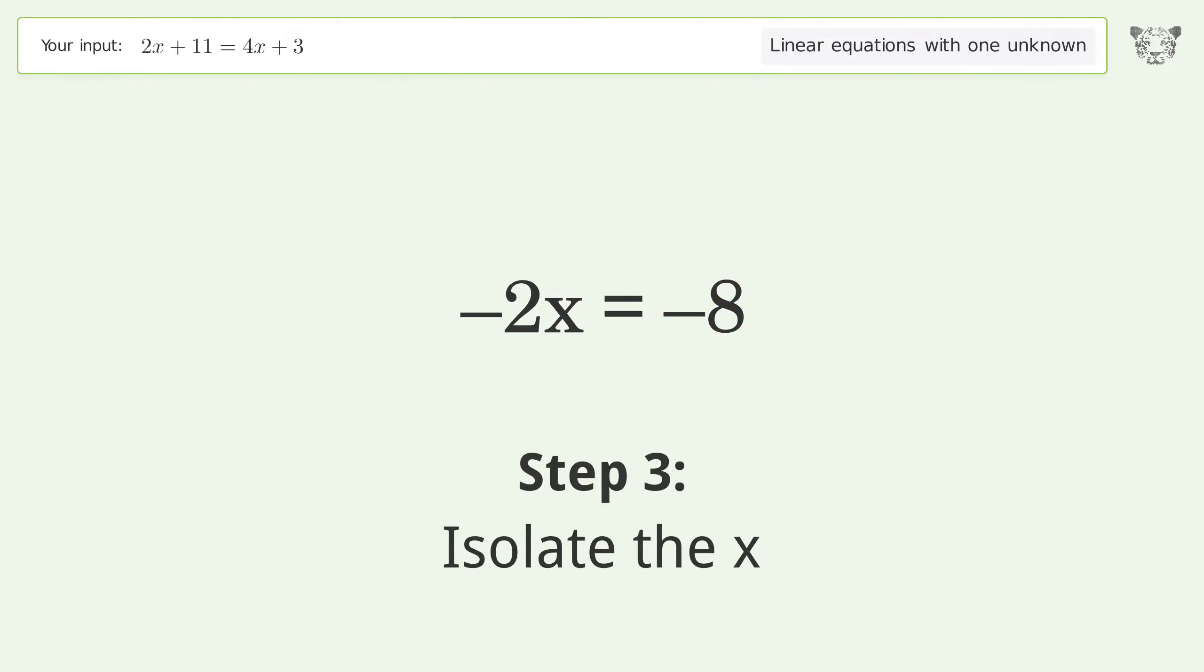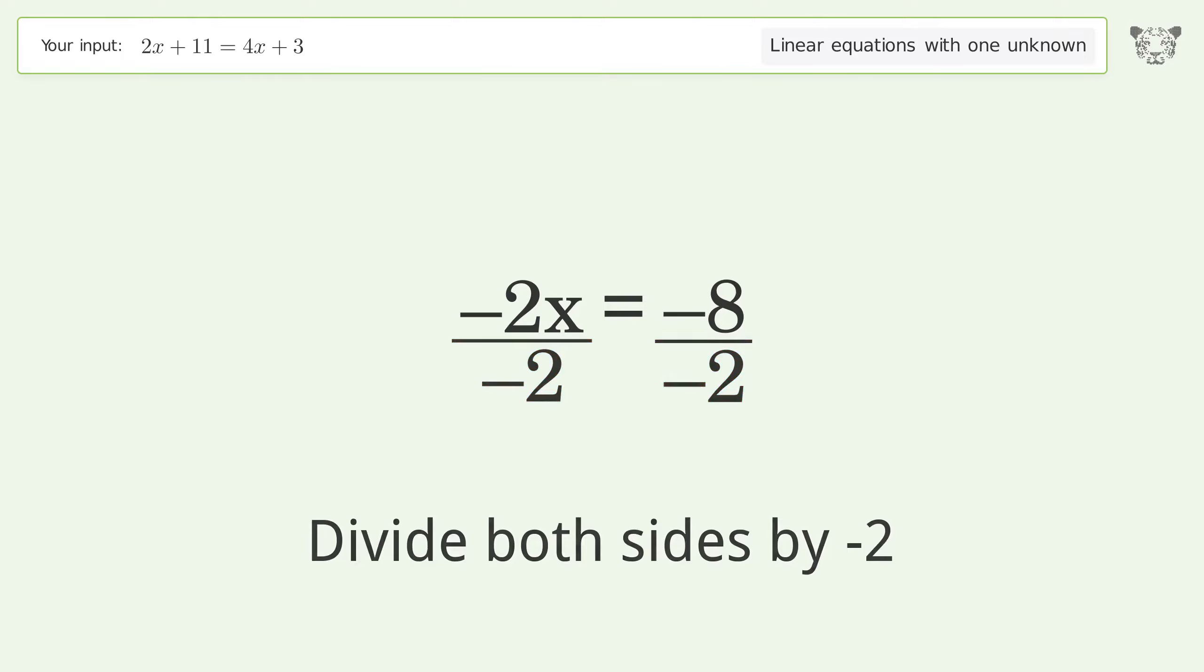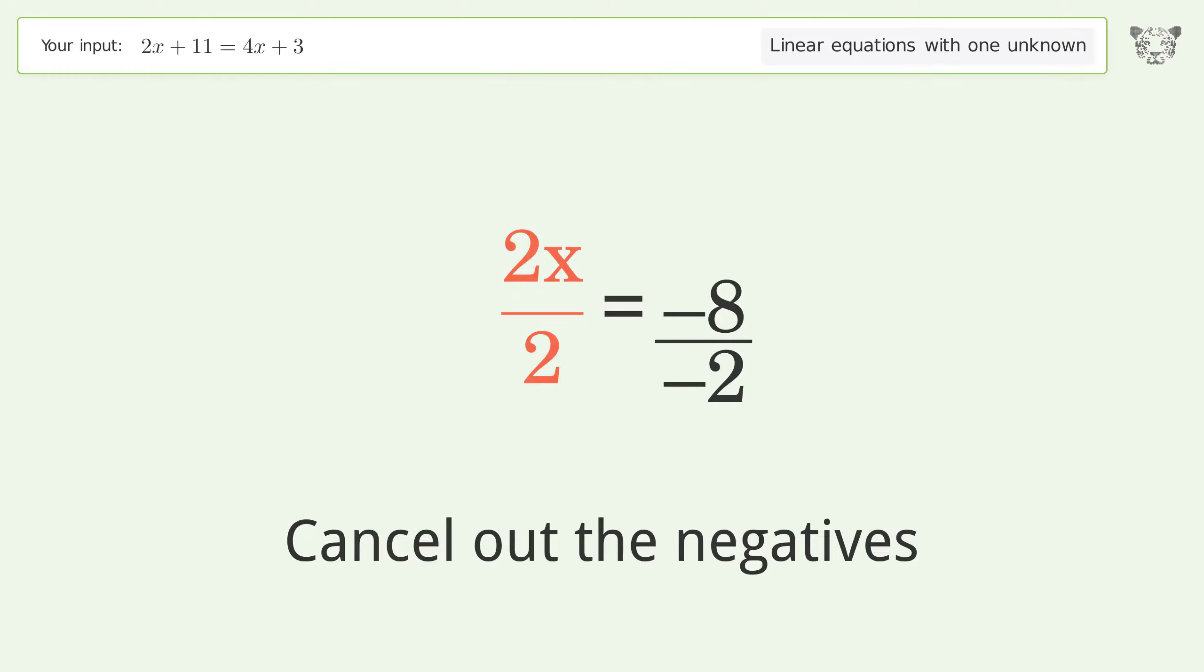Isolate the x. Divide both sides by negative 2. Cancel out the negatives. Simplify the fraction. Cancel out the negatives.